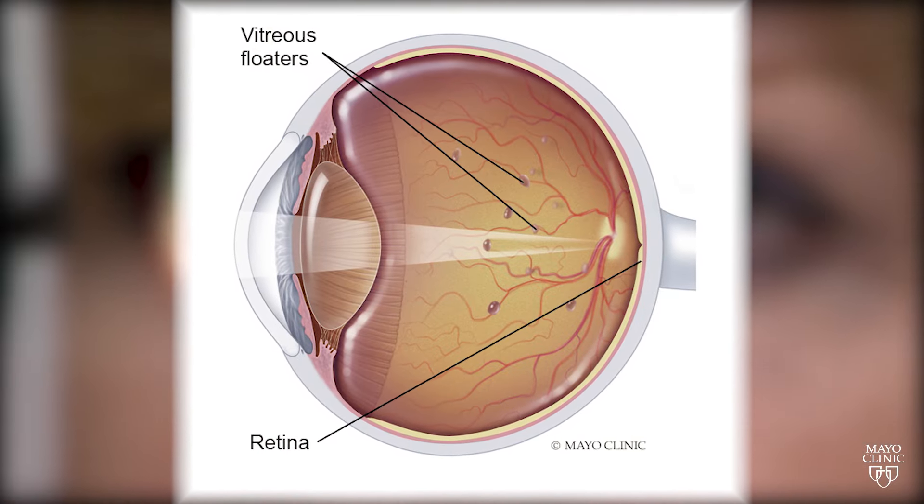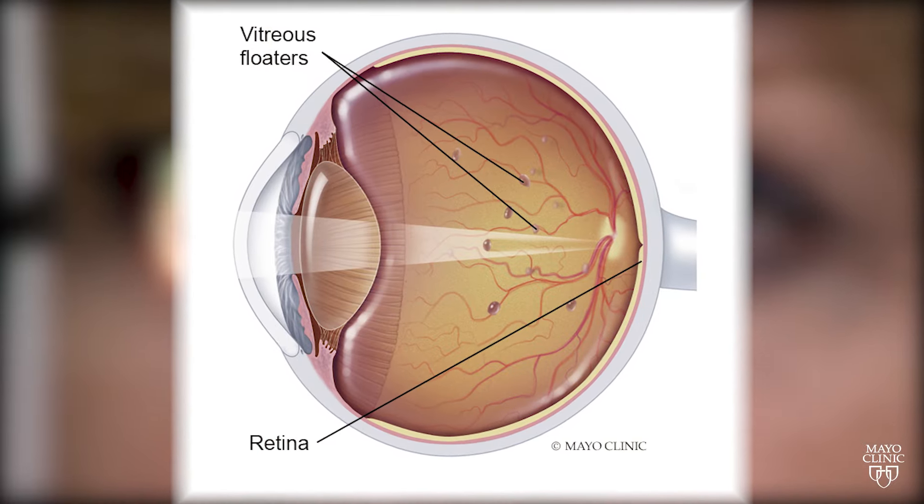On the back of our eyes we have a substance called the vitreous. When we're young it's a firm clump of jelly. As we age, this firm clump of jelly can liquefy and break up into smaller pieces. Those smaller pieces are what you may notice as floaters.